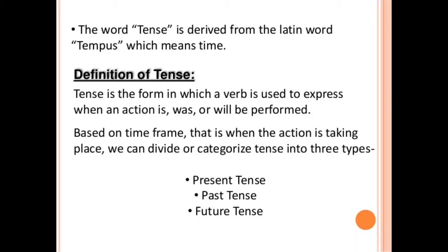The first one is present tense, the second one is past tense, and the third one is future tense. Now, children, let's watch a video about these three tenses with examples.